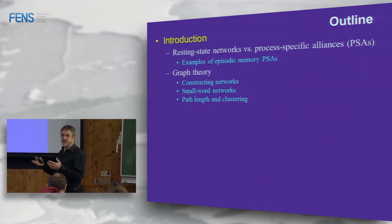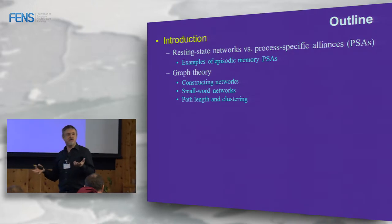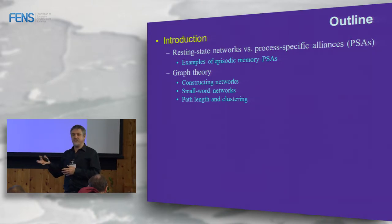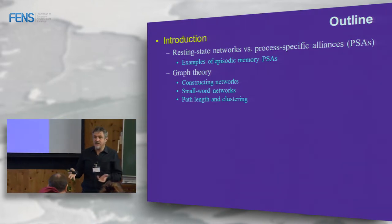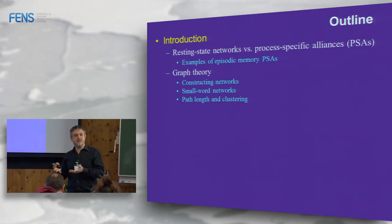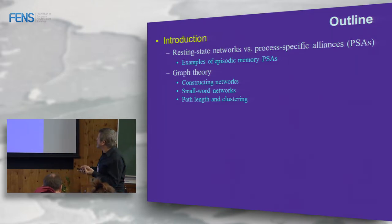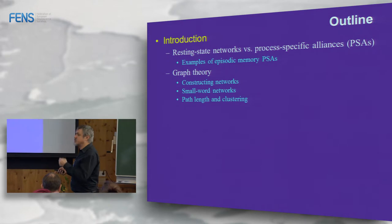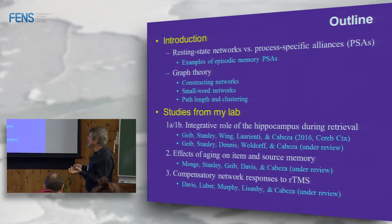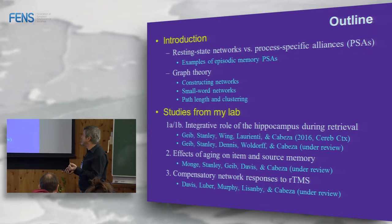Now let's talk about networks in general. Some of you may be doing network research or resting-state MRI — it's becoming very popular. The number of papers published in recent years on resting state has been an exponential function. I'll also cover graph theory, which I think is particularly useful for linking to cognitive neuroscience, and then three studies from my lab focusing on the hippocampus and network integration.